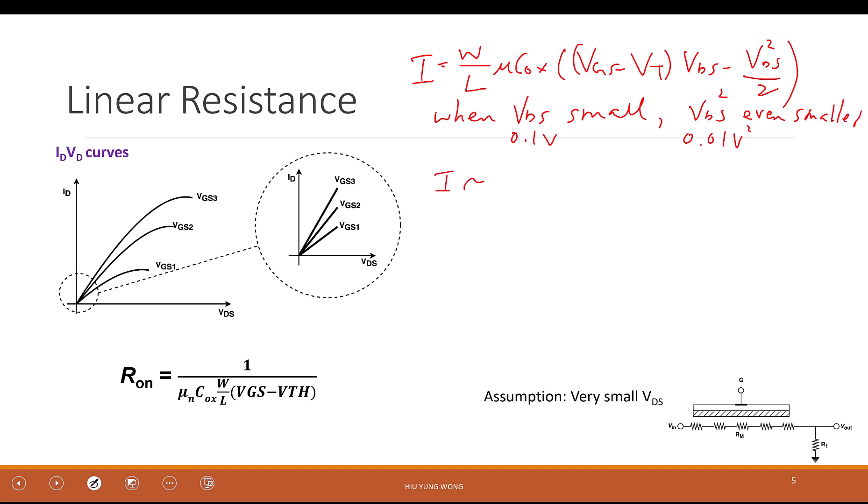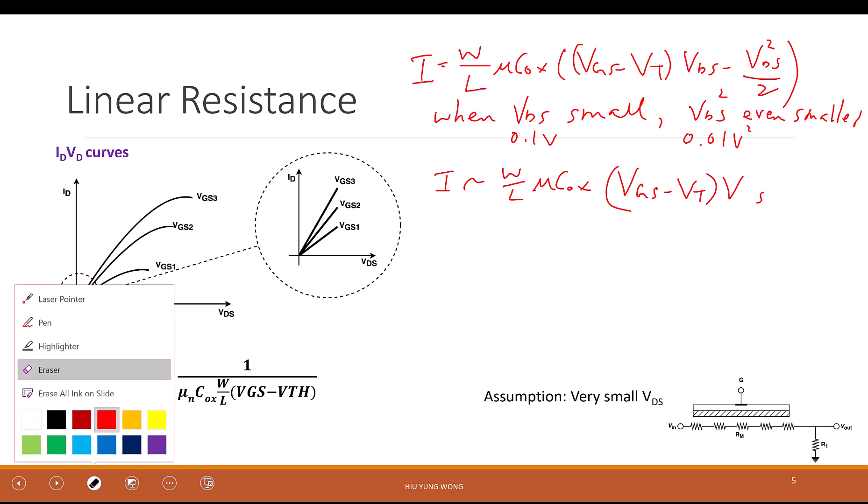So I will be equals to W over L, mu C_ox, Vgs minus Vt times Vds. Because here I just ignore the Vds squared over two term. Do you see this? Because this is small. I assume that I apply a small Vds across the transistor. Not a big one.